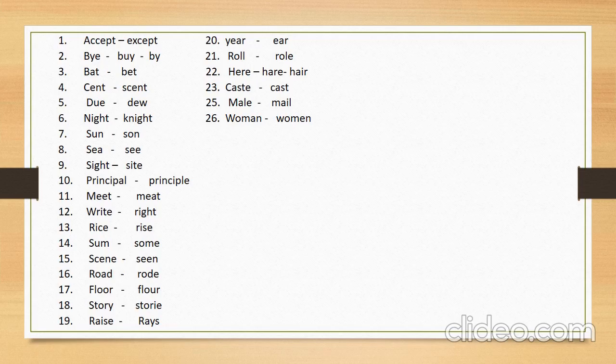Number eleven: 'meet' (mulaqat — to meet). Its similar in sound word is 'meat' (ghost — flesh). Number twelve: 'write' (likhna — to write). Its similar in sound word is 'right,' meaning sahi — correct. Number thirteen: 'rice' (chawal — rice). Its similar in sound word is 'rise,' meaning surach ka tulu hona — to rise or ascend.